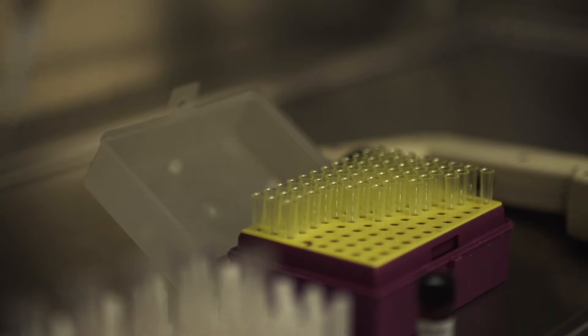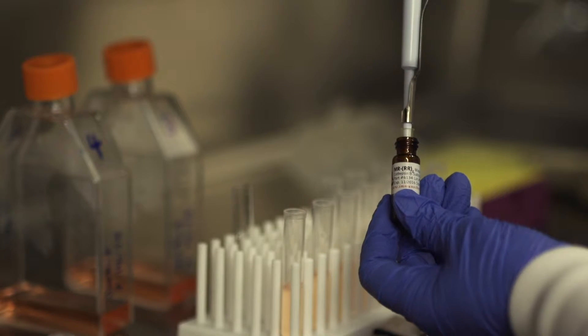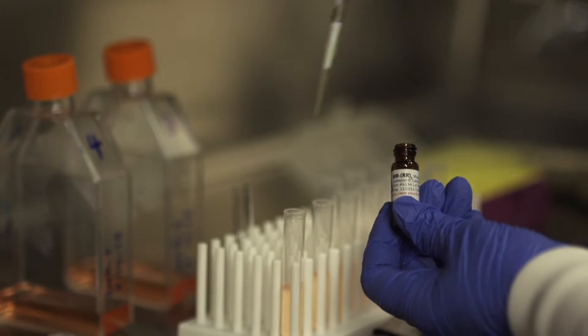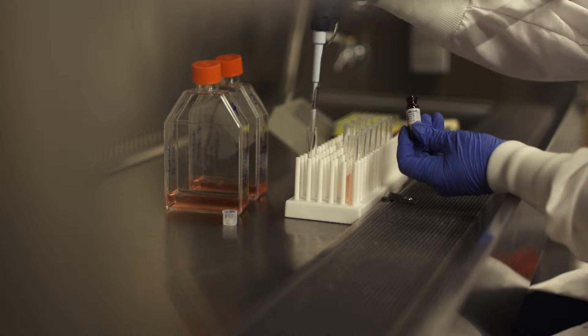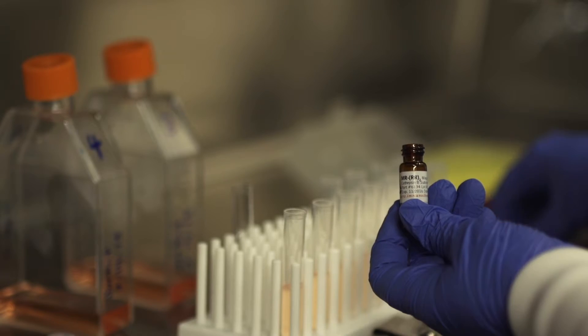Next, reconstitute and dilute the Magic Red substrate and add to each sample. Magic Red is cell permeant and will diffuse in and out of all cells and internal cellular organelles. There's no need to lyse or permeabilize the cells.